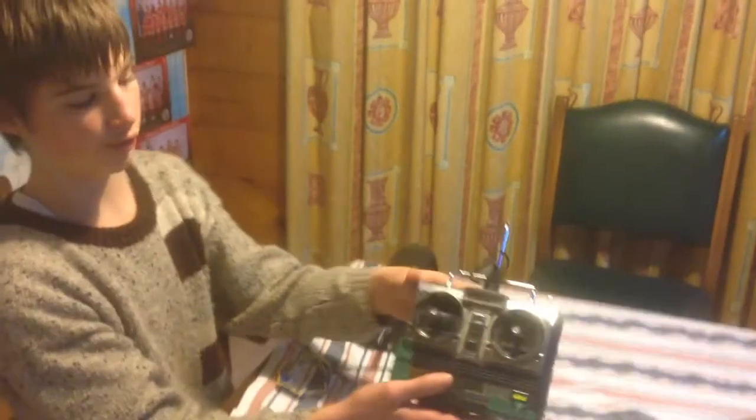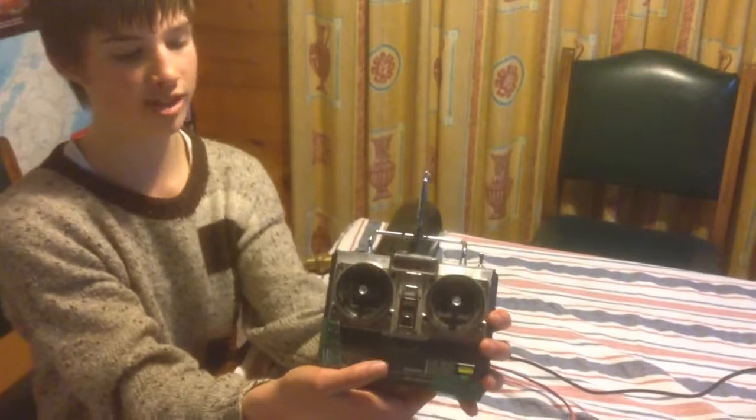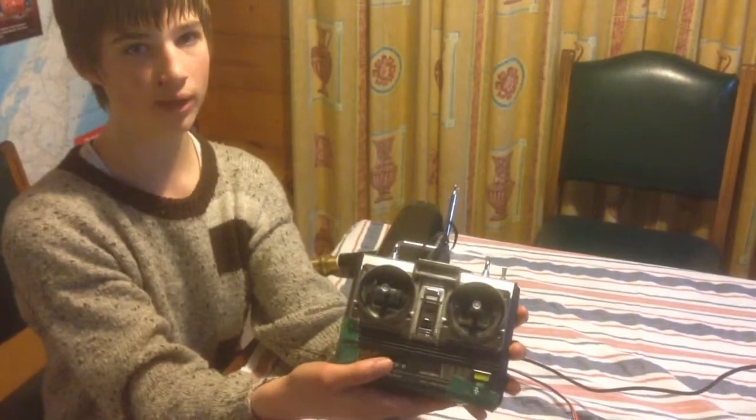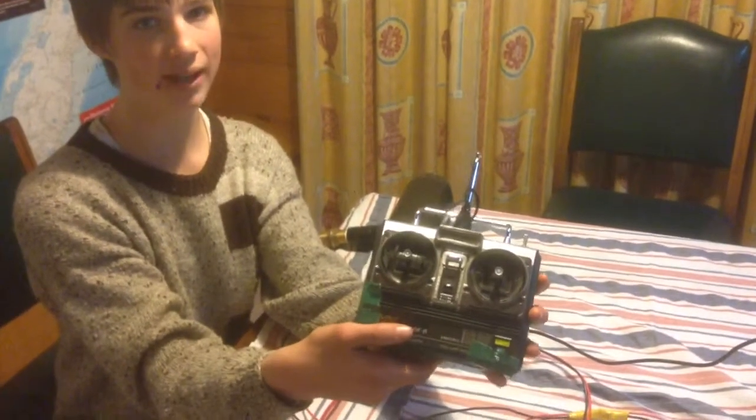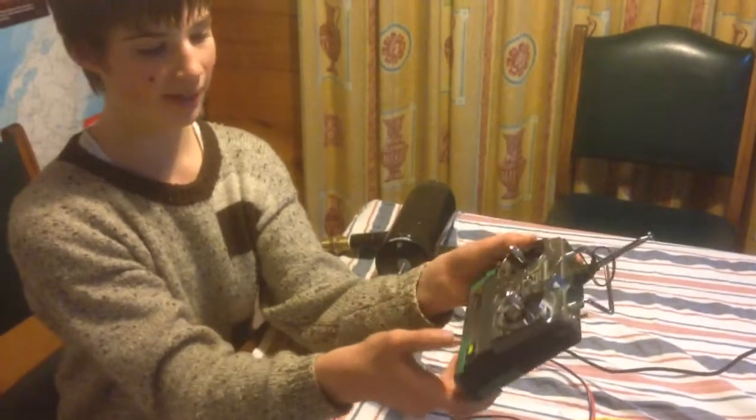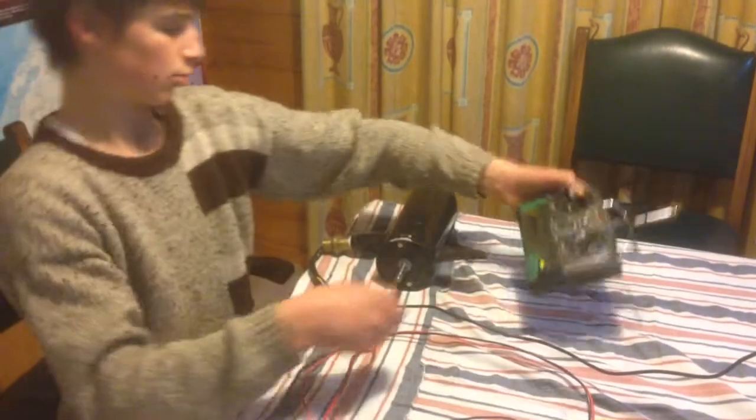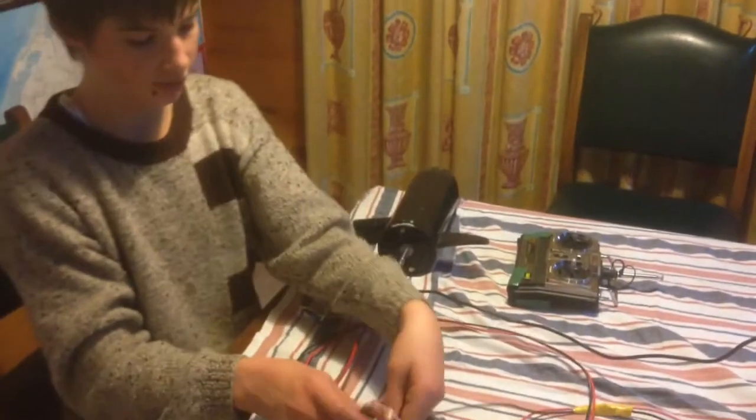To start with, I had an old Futaba ATAK R transmitter. It operates on a 40MHz AM band and I had to replace the crystals on it because the old ones were all worn out. And this comes to the receiver.